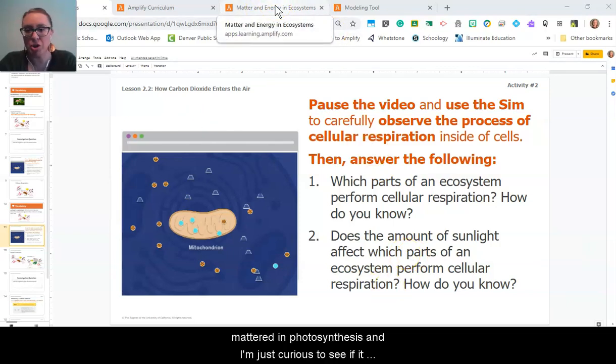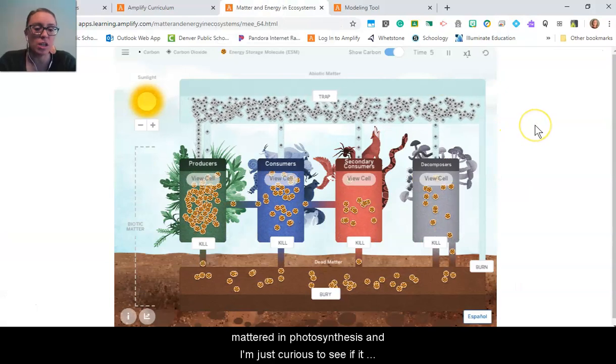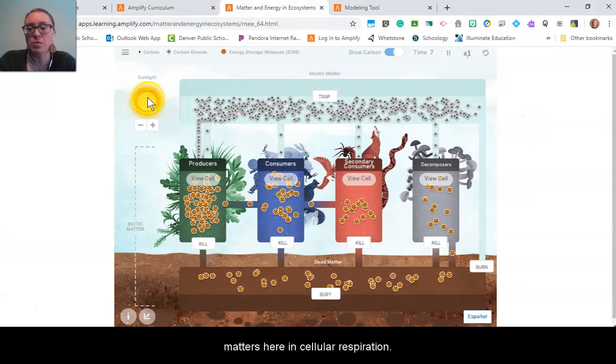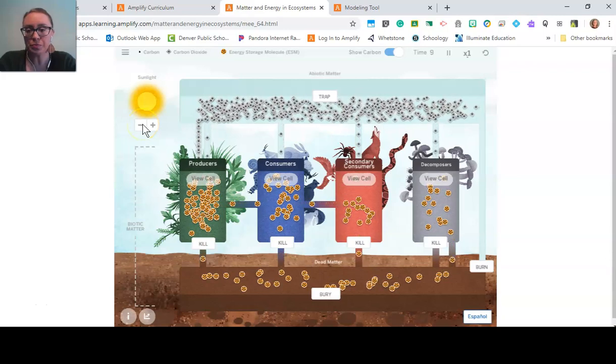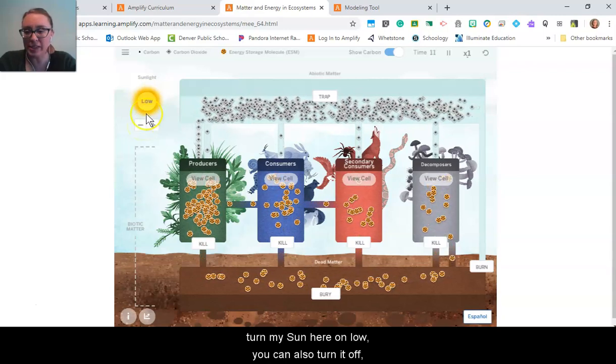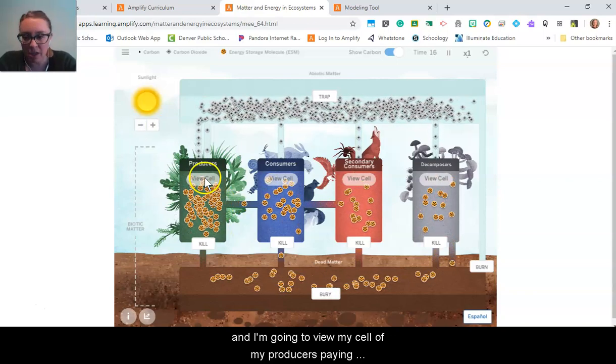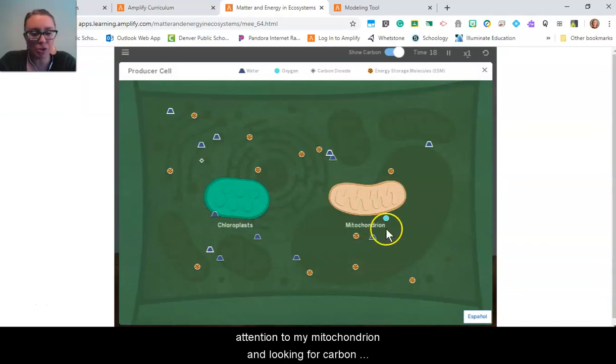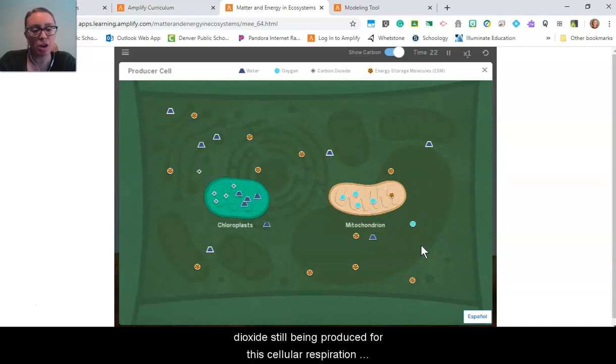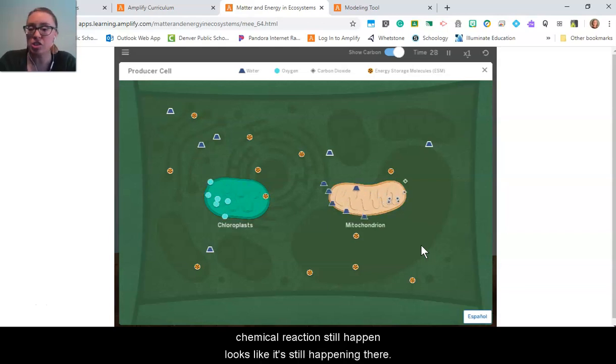I'm just curious to see if it matters here in cellular respiration, so I'm going to turn my sun here on low—you could also turn it off—and I'm going to view my producers, paying attention to my mitochondrion, looking for carbon dioxide still being produced for this cellular respiration chemical reaction to still happen. Looks like it's still happening there.